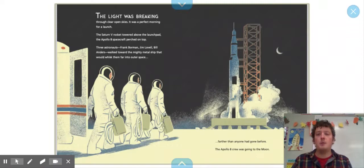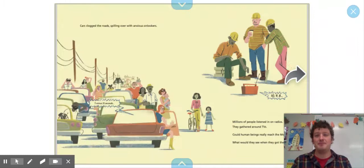The light was breaking through the clear open skies. It was a perfect morning for a launch. The Saturn V rocket towered above the launch pad. The Apollo 8 spacecraft perched on top. Three astronauts, Frank Borman, Jim Lovell, and Bill Anders, walked towards the mighty metal ship that would whisk them far into outer space, farther than anyone had gone before. The Apollo 8 crew was going to the moon!